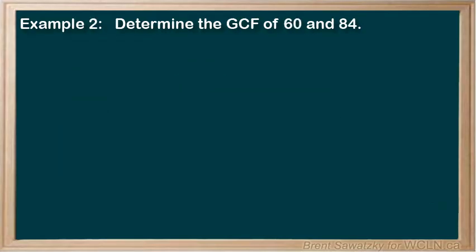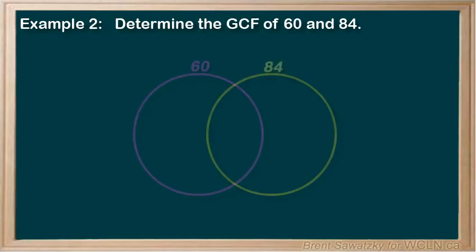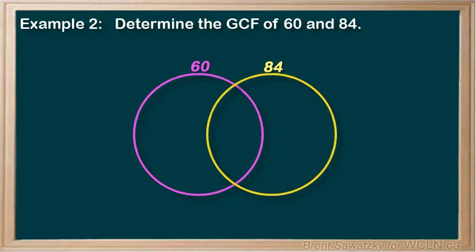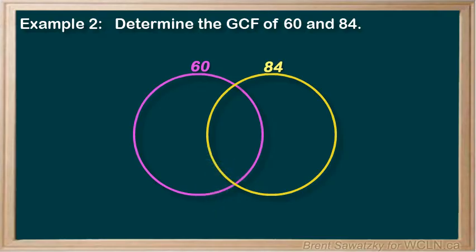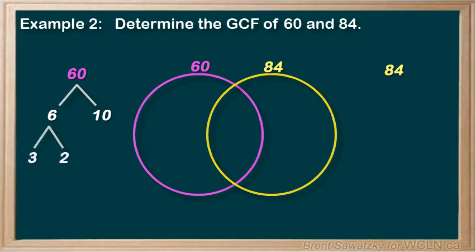Example 2: Find the greatest common factor of 60 and 84. This one uses bigger numbers, so you might find the Venn diagram even more useful here. We draw our two overlapping circles — one for the 60 and one for the 84. To generate our prime factors, we'll use factor trees, one for each number. For 60, maybe you see that 60 is the same as 6 times 10. We can break down the 6 into 3 times 2, and the 10 into 2 times 5. So we're left with 4 prime factors: 3, 2, 2, and 5.